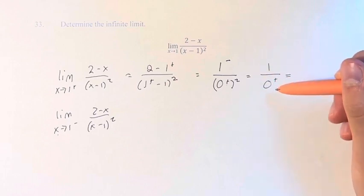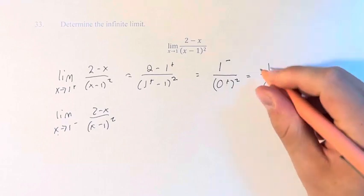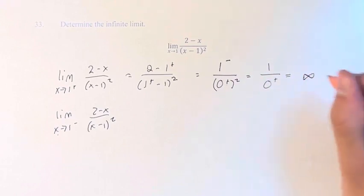And a number divided by 0, or rather numbers that are approaching 0, equals infinity or negative infinity. And since this is a positive number divided by a positive number, it's positive infinity.